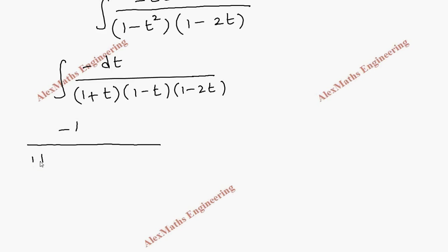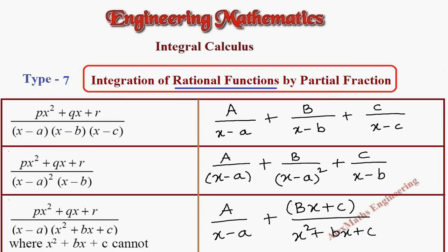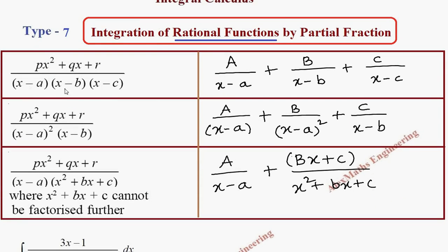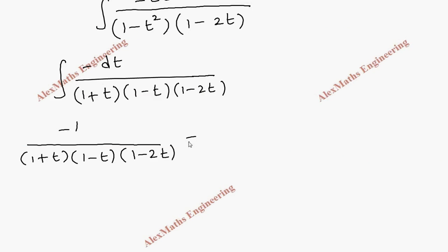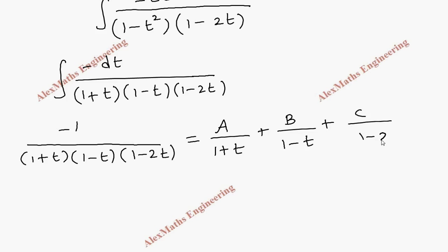We have minus 1 divided by (1 plus t)(1 minus t)(1 minus 2t). Since all three factors are different, we use the partial fraction rule: A divided by the first factor plus B divided by the second factor plus C divided by the third factor. So it becomes A/(1 plus t) plus B/(1 minus t) plus C/(1 minus 2t).